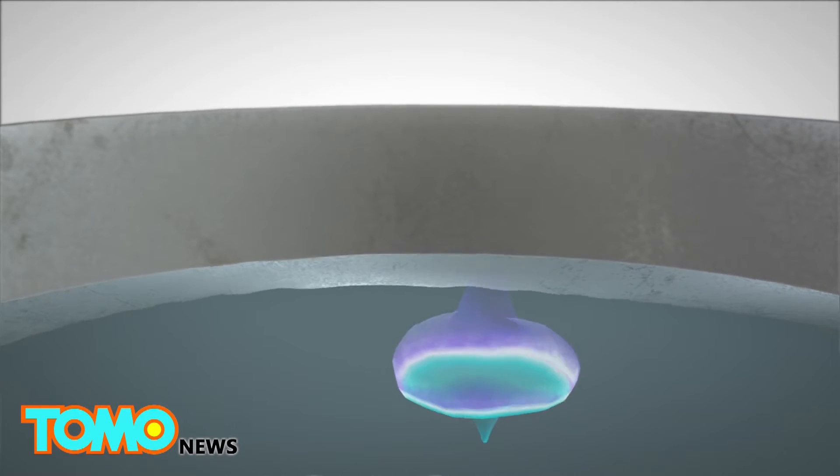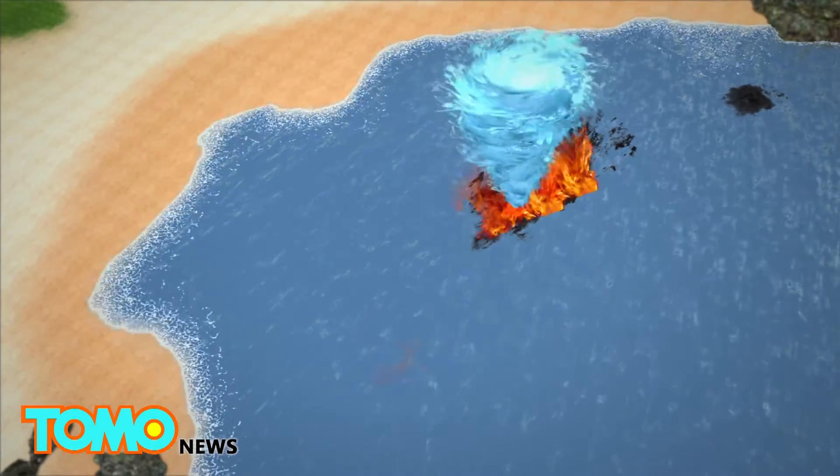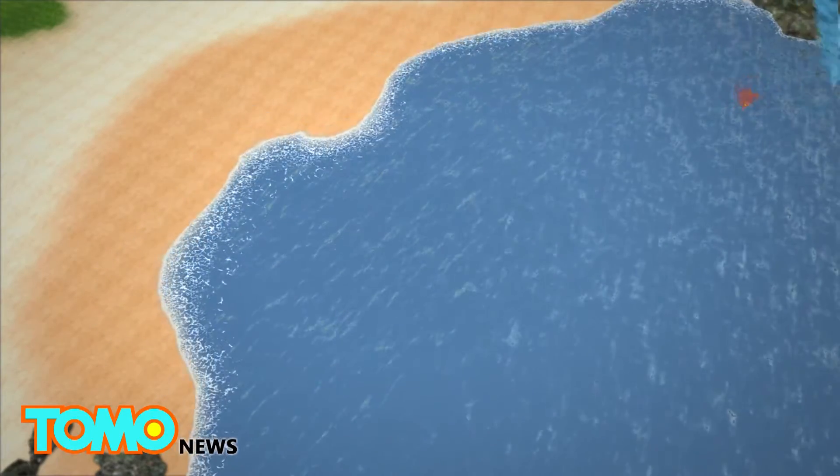A blue-tinged fire tornado named Blue Whirl was discovered by a team of researchers at the University of Maryland. The fire tornado in controlled conditions could be the most efficient way to burn hydrocarbons.